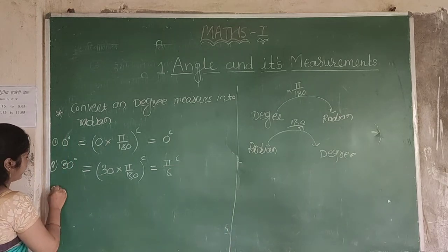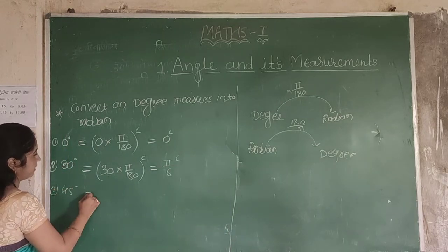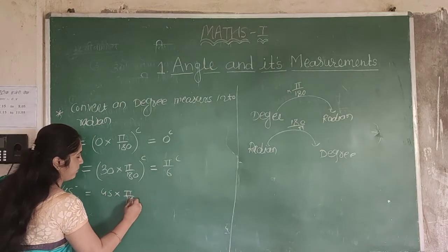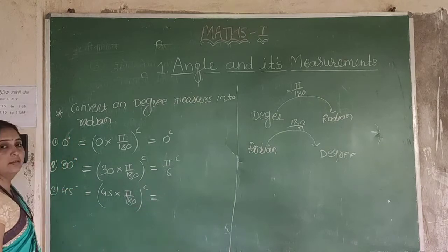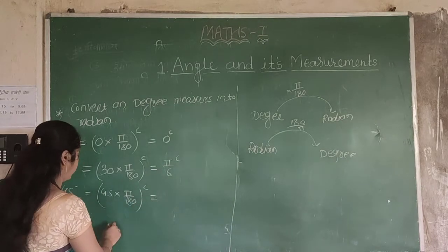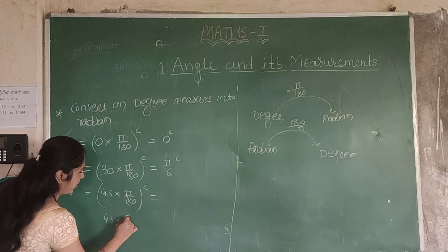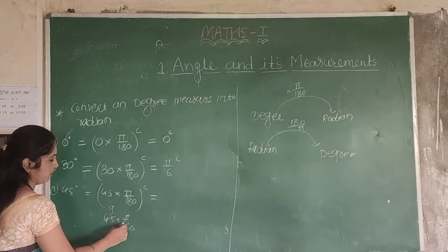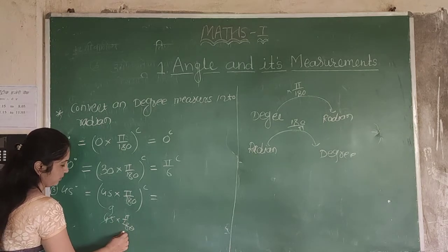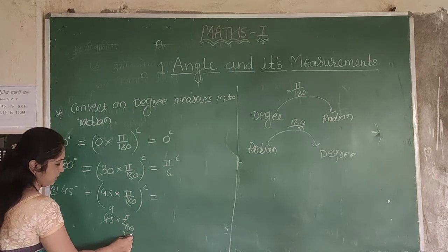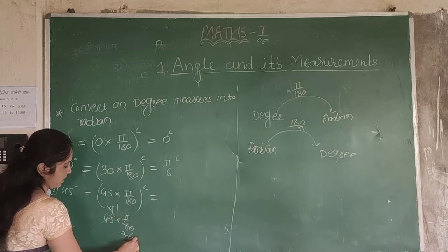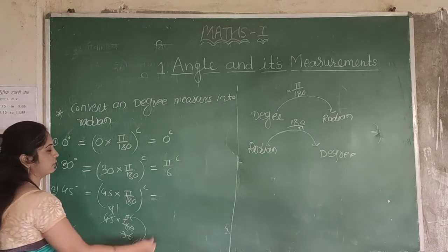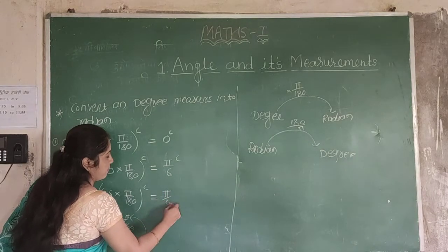Third standard angle is 45 degrees. Again multiply by pi by 180. So 45 into pi by 180. We simplify: 45 and 180 — 9 goes into both — giving 5 by 4. So 45 degrees equals pi by 4 radians.